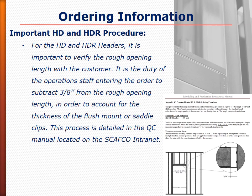An important note on the ordering process: for the HD and HDR headers, it is important to verify the rough opening dimension and header length with the customer. It is the duty of the operations staff entering the order to subtract 3/8 of an inch from the rough opening length of the header in order to account for the thickness of the flush mount or saddle clip. This process is detailed in the QC manual located on the Scafco intranet site — please review this before placing any and all orders.